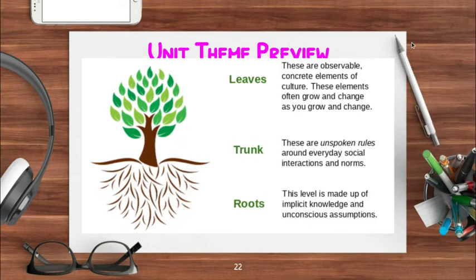The leaves of the tree represent the observable, concrete elements of culture — those things that you can definitely see. For example, certain clothing like a hijab or a yarmulke, certain songs or dances, food, cooking, and music that people practice. Those are the leaves — the easy-to-see elements that often grow and change as you grow and change.